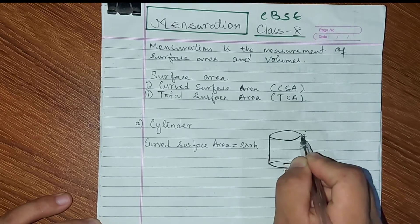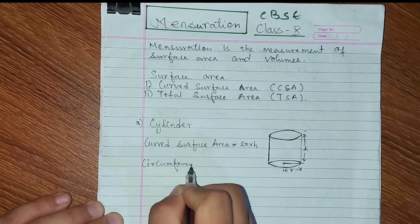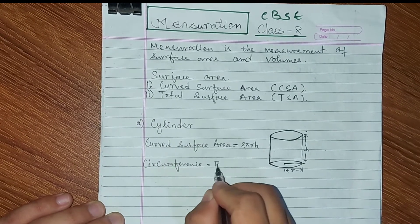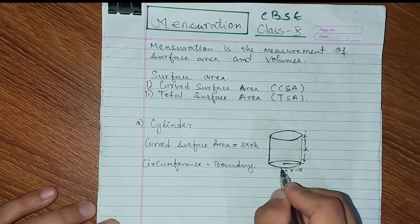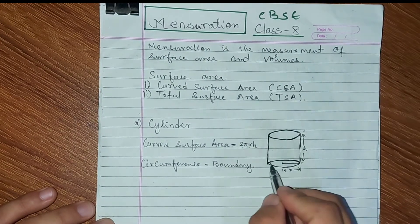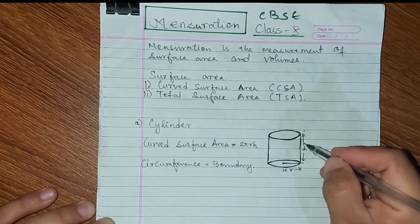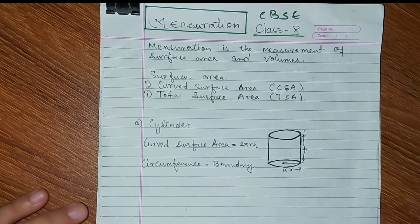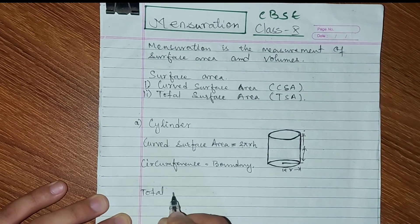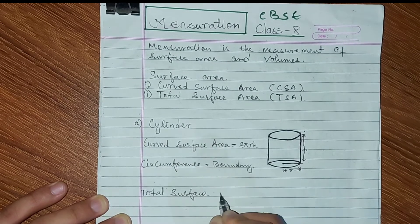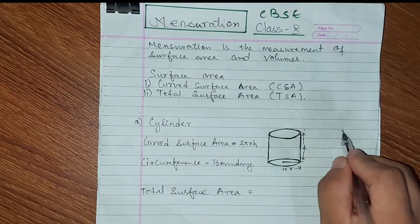The circumference of the circle into the height of the cylinder will give us the curved surface area. The total surface area of the cylinder is the total area of the cylinder.